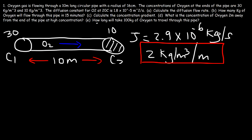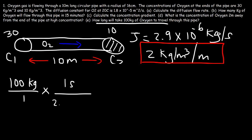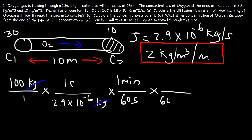For the last part: how long will it take 100 kilograms of oxygen to travel through this pipe? We divide the mass — 100 kilograms — by the diffusion flow rate of 2.9 times 10 to the minus 6 kilograms per second to get the time in seconds. Converting to minutes by dividing by 60, and then to hours by dividing by 60 again, gives approximately 9,578.5 hours.